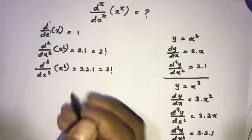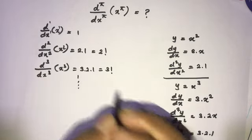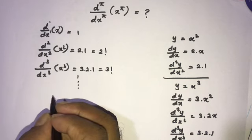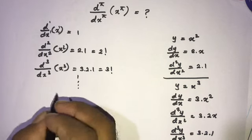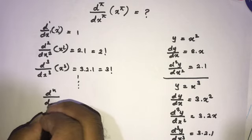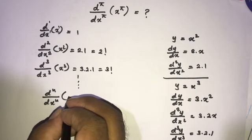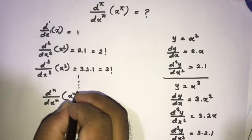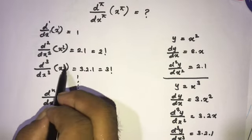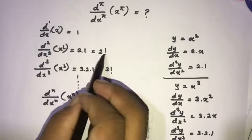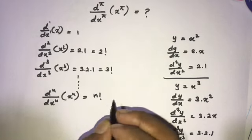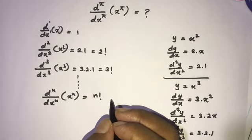There is a clear pattern here. According to this pattern, we can write the general formula for the nth derivative of x to the nth power: the nth derivative of xⁿ with respect to x is equal to n factorial.